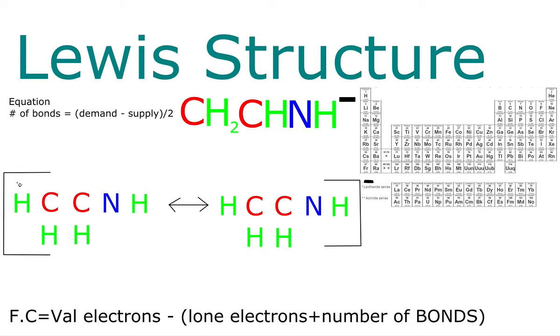Hydrogen follows that duet rule where it likes to be like helium. It likes to have two. So does that one, so does that one, so does that one. Carbon and nitrogen like to have the neon configuration, so it has that octet rule. It likes to have eight surrounding it. If we add all those up, that should be 32.